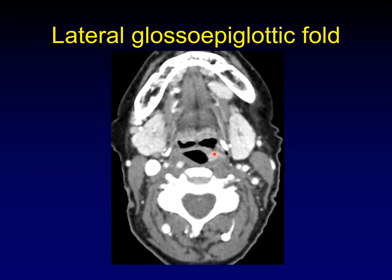Here's an example of a tumor that arose, perhaps even in the glossoepiglottic fold, and then extends both to the epiglottis — you can see how thickened it is compared to its counterpart on the other side — and extends out to the pharyngeal wall.